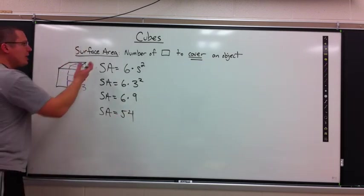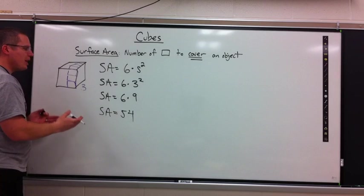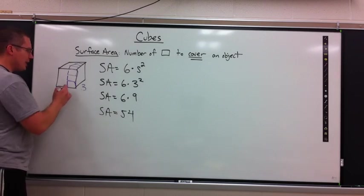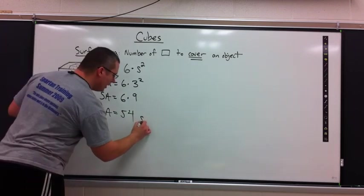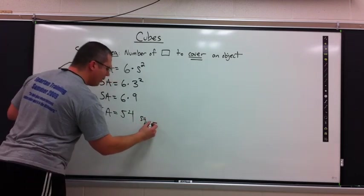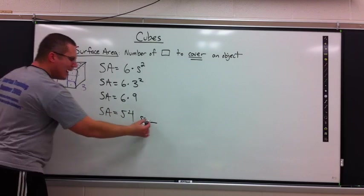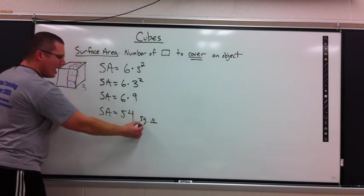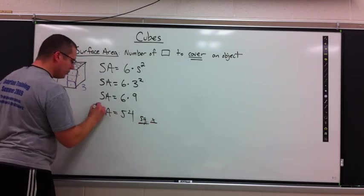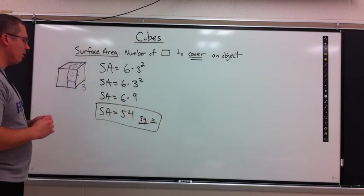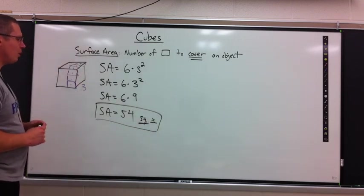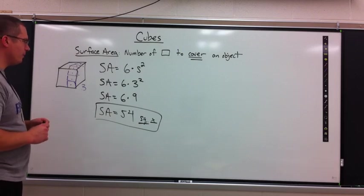Question is, what's my label? Well, you did surface area. What did you just get done counting? You counted the number of squares it took to cover the object. So my label is squares. I don't care inches, feet, meters. That's not as important as the idea of counting squares is. Surface area, 54 square.